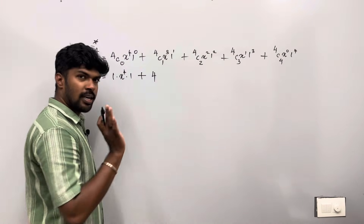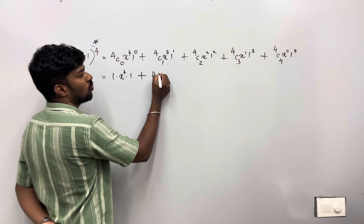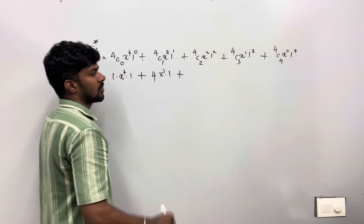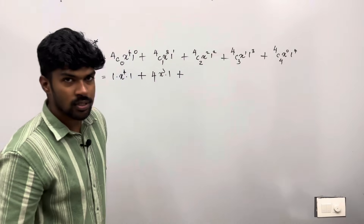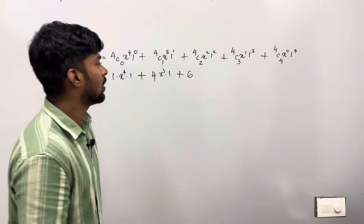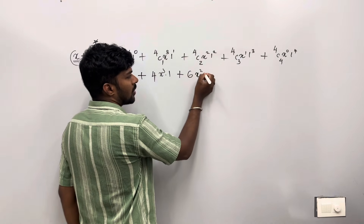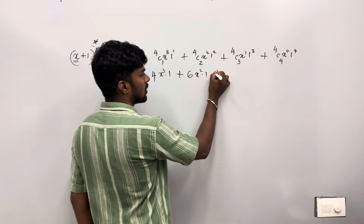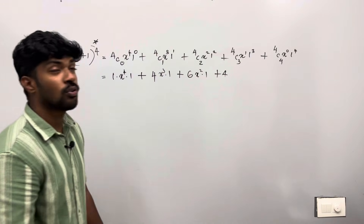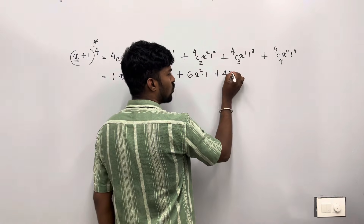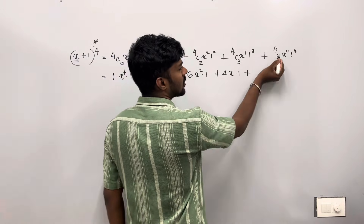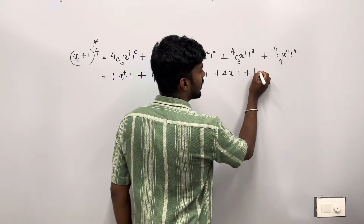4C0 — you need a calculator. This is x cube. 1 raised to 1, 1 is power 3. This is plus 4C2 — if you have a calculator, your answer is r. x squared, that's the answer. 1 is power 3, plus 4C3 — you need calculator. 4, x raised to 1. 4C4 — x raised to 0.